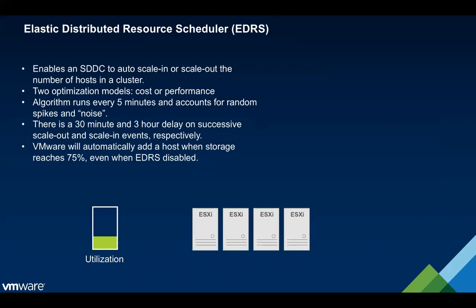Even if you have EDRS disabled, we will actively monitor the storage of the SDDC for vSAN health reasons. vSAN needs a certain amount of slack space in order to stay healthy. If you cross 70% utilization on your storage, we will alert you and suggest adding another host. If you ignore that notification and cross the 75% threshold, we will automatically add a host to the SDDC. This is a preventative measure to keep vSAN healthy within your SDDC.